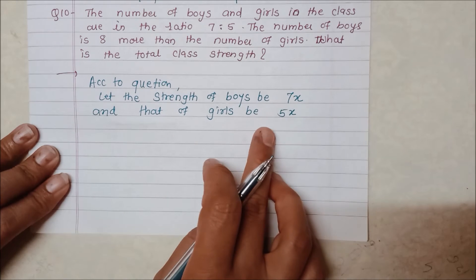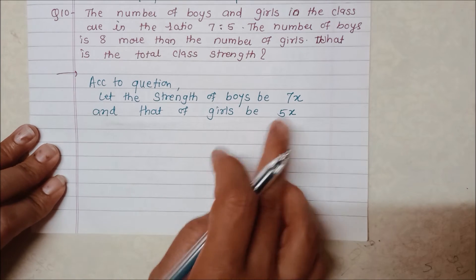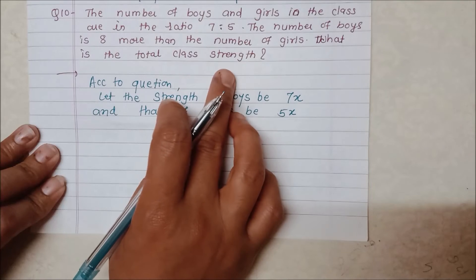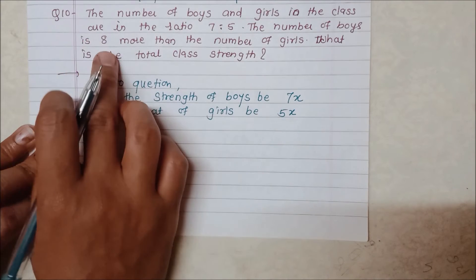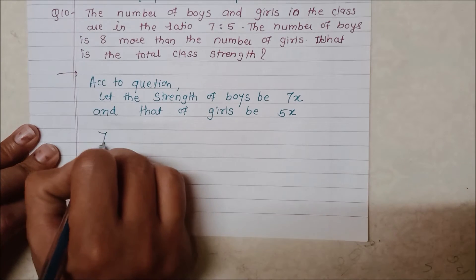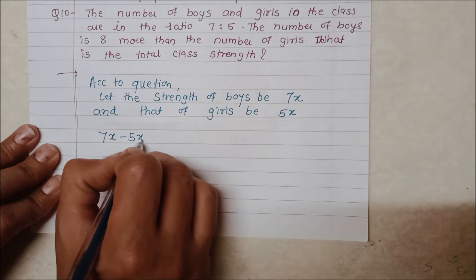So here we have written 7x and 5x. We need to find the difference between girls and boys, which is only 8. So here we will write 7x minus 5x is equal to 8.